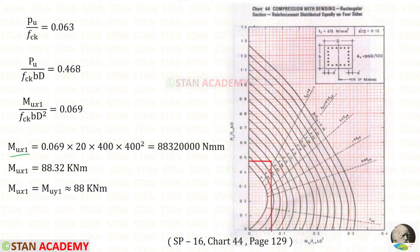We will get the value in Newton millimeter. Then we can divide that by 10 to the power 6, so that we will get in kilonewton meter. We can approximately take it as 8. We know that in this square column MUX1 and MUY1 are same.